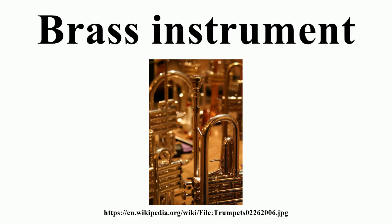Traditionally the valves lower the pitch of the instrument by adding extra lengths of tubing. The 1st valve adds 1/8th of the main tube, making an interval of 9:8, a Pythagorean major 2nd. The 2nd valve adds 1/15th of the main tube, making an interval of 16:15, a just minor 2nd. The 3rd valve adds 1/5th of the main tube, making an interval of 6:5, a just minor 3rd. Combining the valves and the harmonics of the instrument leads to ratios compared to 12-tone equal tuning and to a common 5-limit tuning in C.